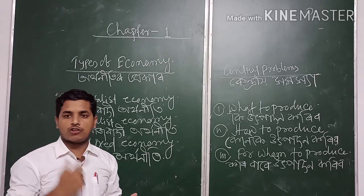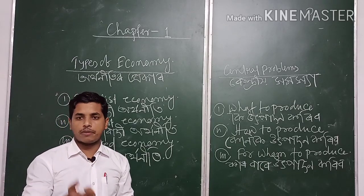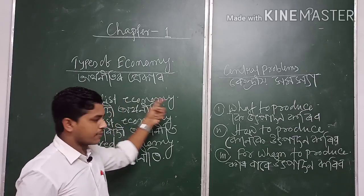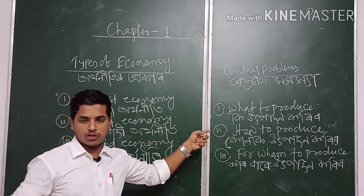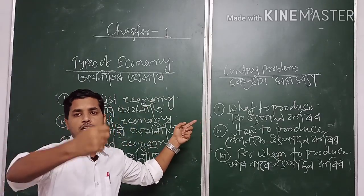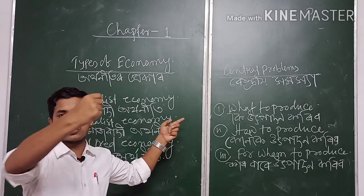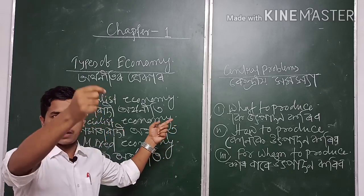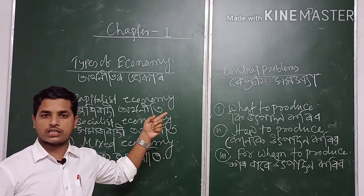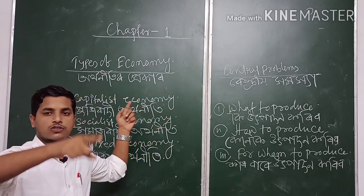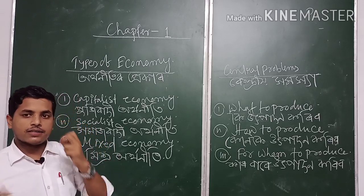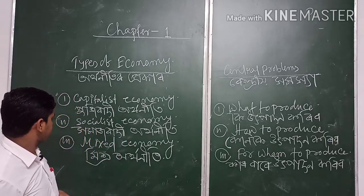USA — that is, the United States of America — is an example of a Capitalist Economy. Because in America, the means of production are owned by the private sector, controlled by the private sector, as well as operated by the private sector.